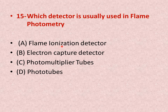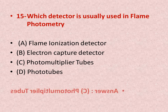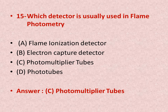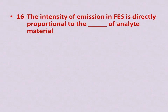Question number fifteen: which detector is usually used in flame photometry? Options: A is flame ionization detector, B is electron capture detector, C is photomultiplier tubes, D is phototubes. The detector most frequently used in flame photometry is photomultiplier tubes, which is option C.